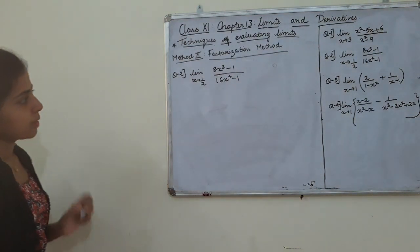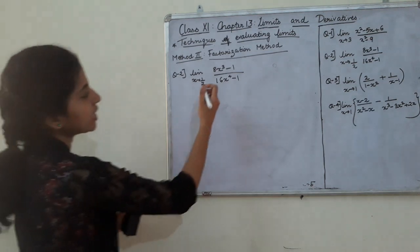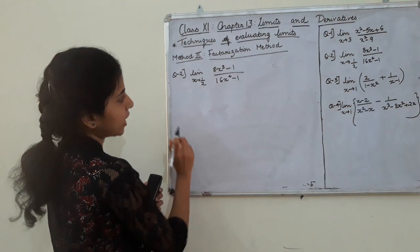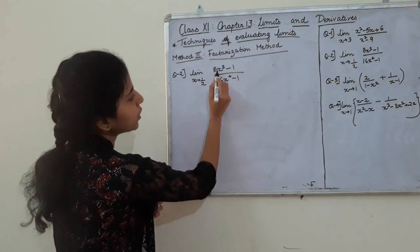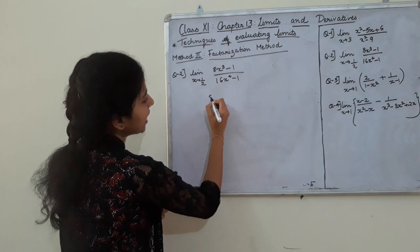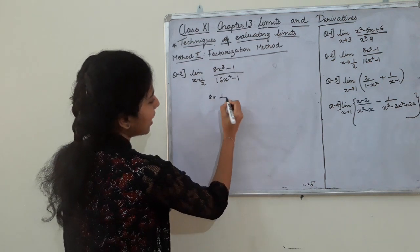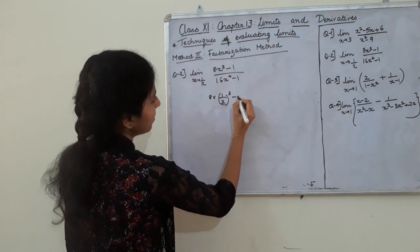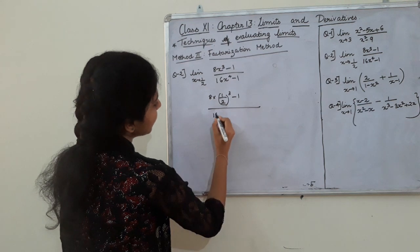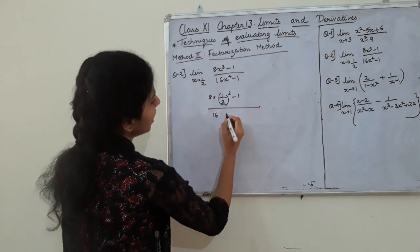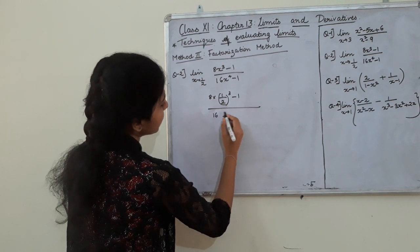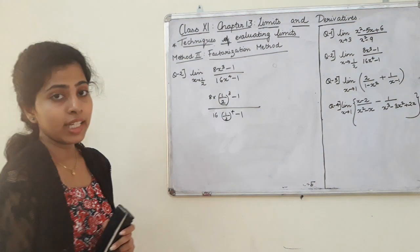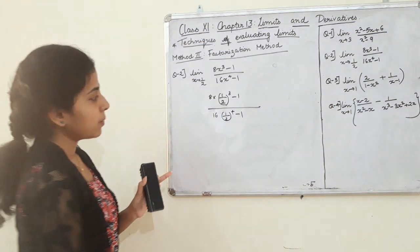If we use the direct substitution method, we put x = 1/2. So we get 8 into (1/2)³ minus 1, divided by 16 into (1/2)⁴ minus 1. This is our substitution.